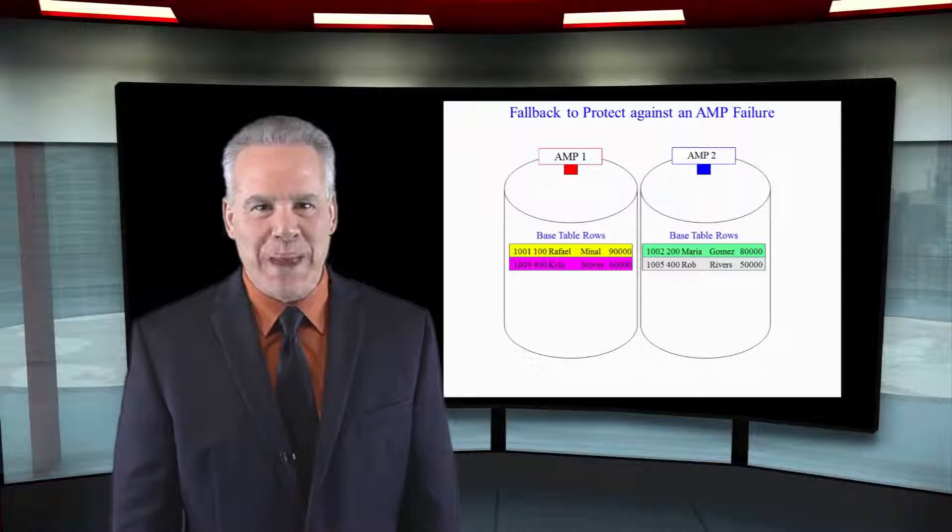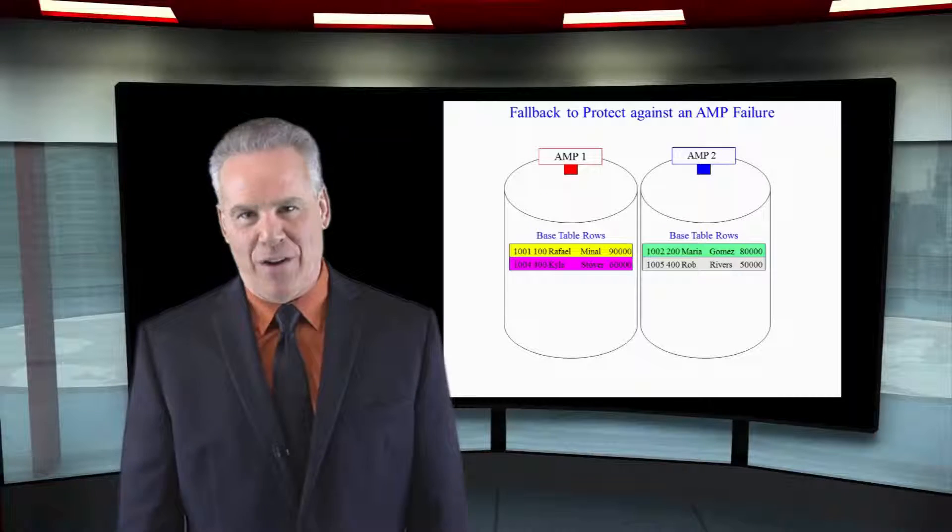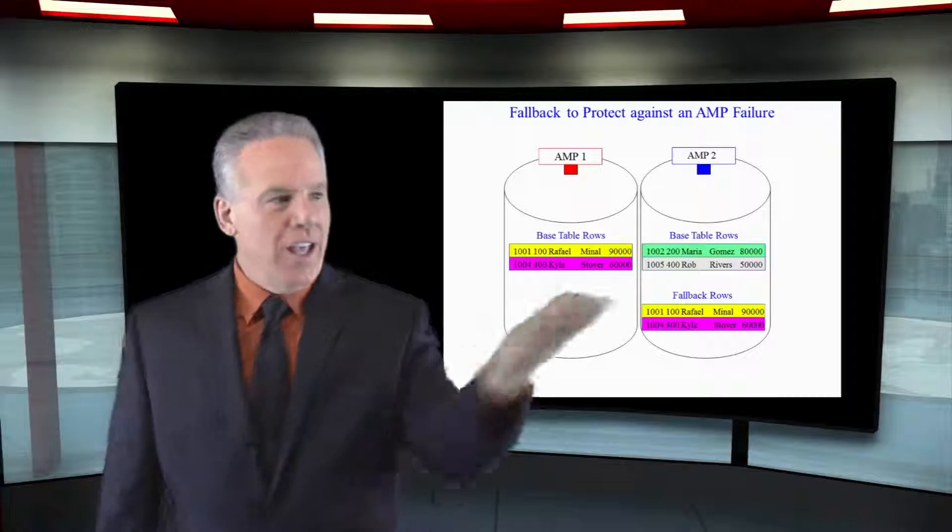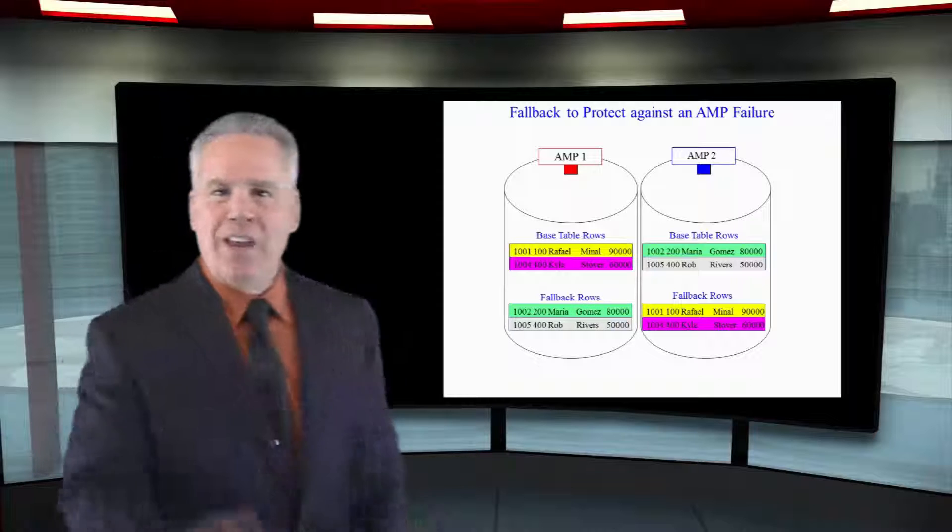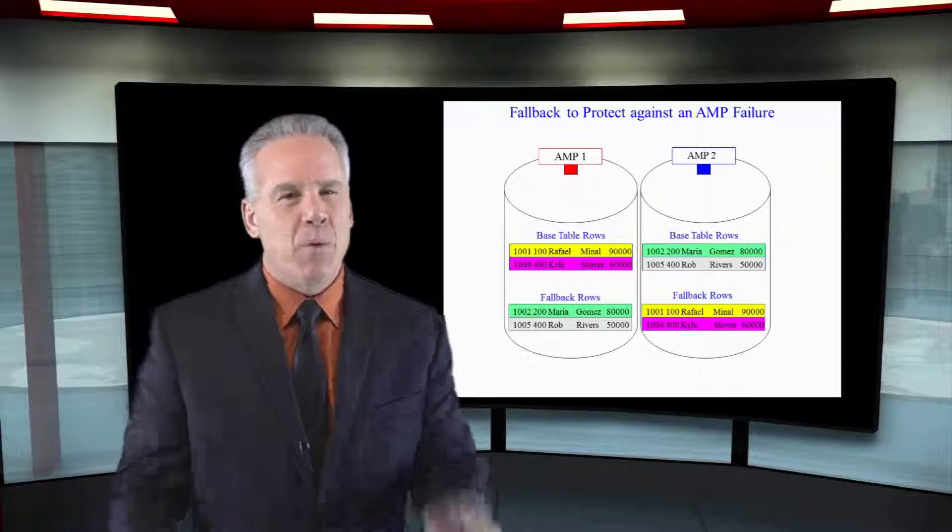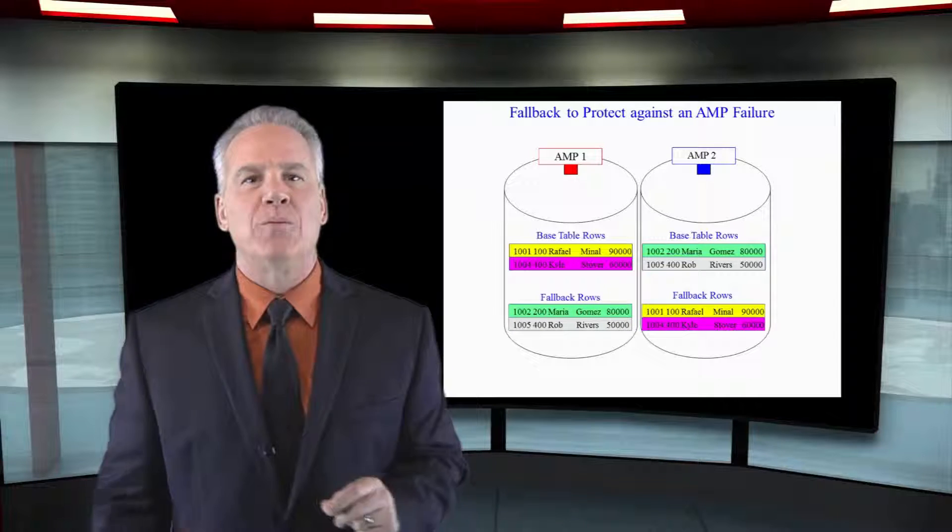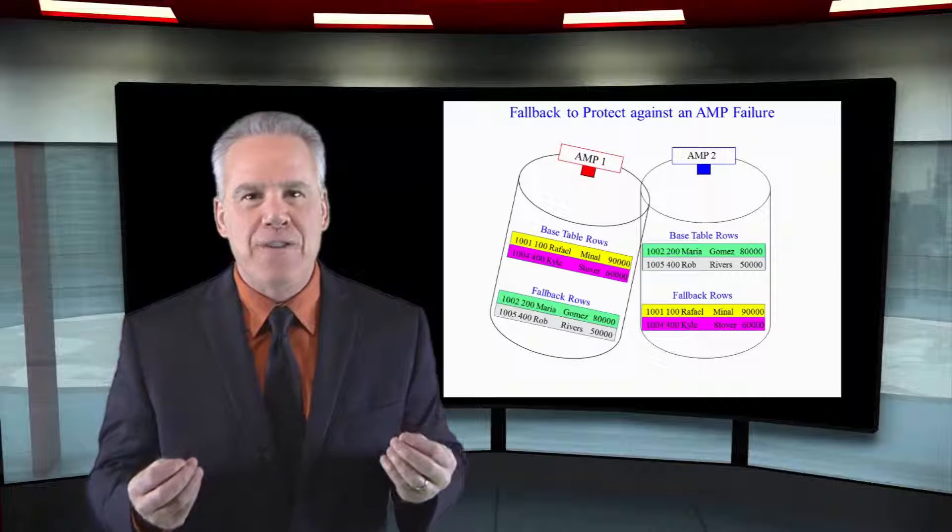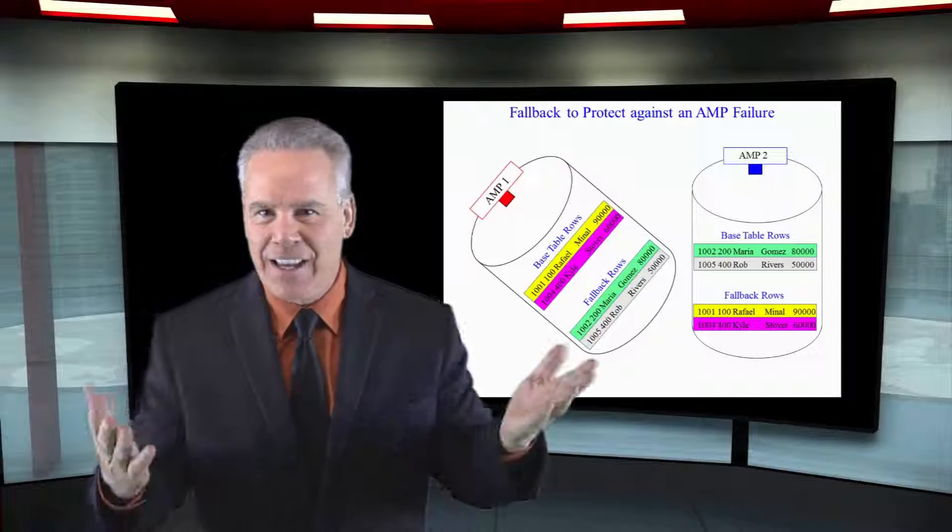There's always good news and bad news. There's always some type of tradeoff, right? Well, the good news is if AMP one goes down, AMP two's got its data, but what price do you pay in terms of space? Fifty percent.